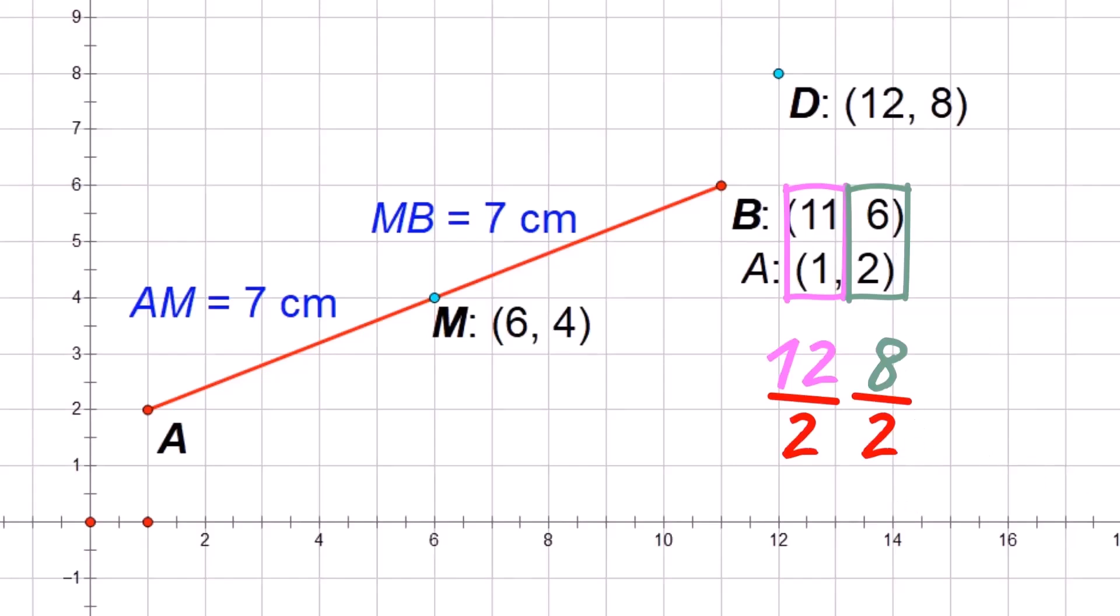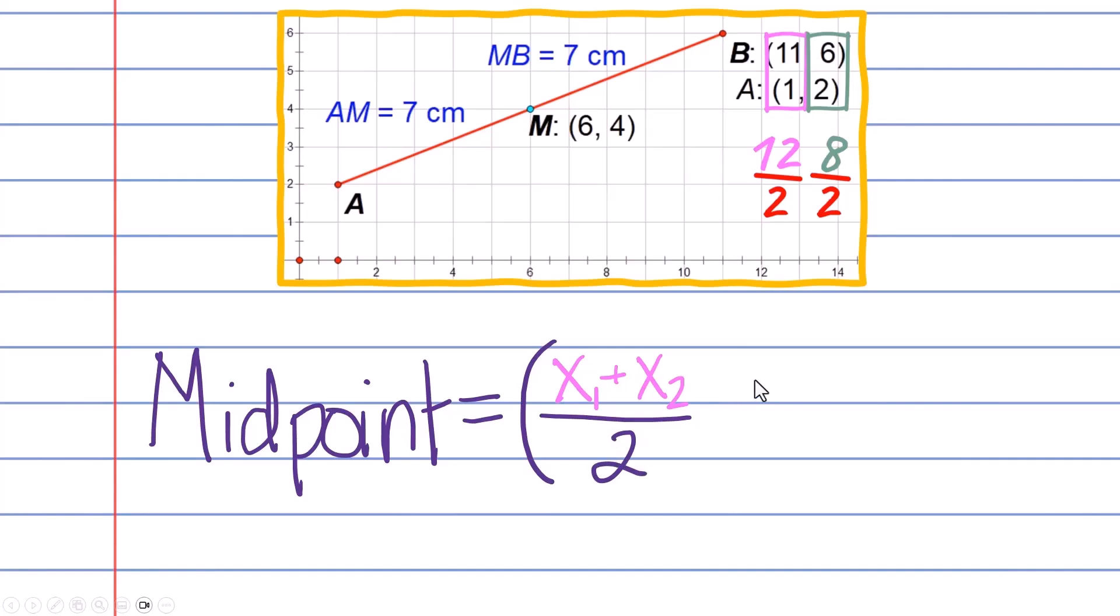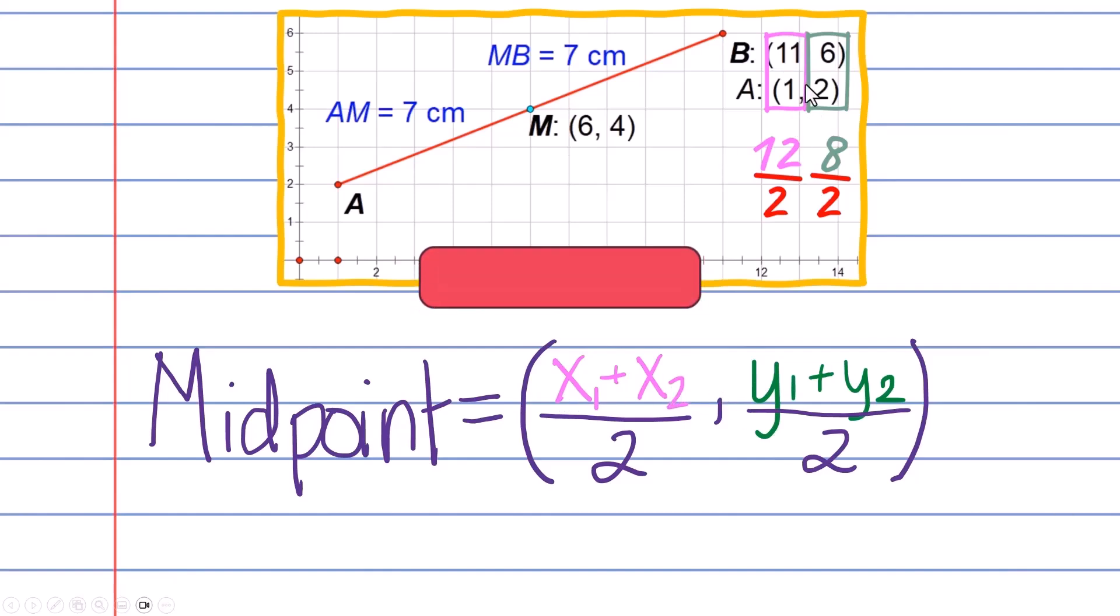So that should help you understand the actual midpoint formula, which is this: x₁ plus x₂, that's the first x and the second x, doesn't really matter, you can switch them up because you're adding them, divided by 2. And then we're going to do the same thing with the y's. y₁ plus y₂ divided by 2. Add the x's together, divide by 2. Add the y's together, divide by 2.